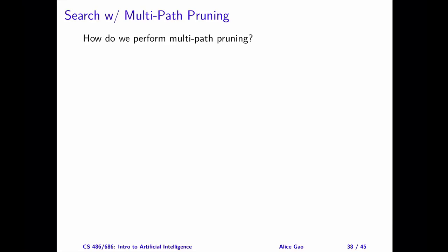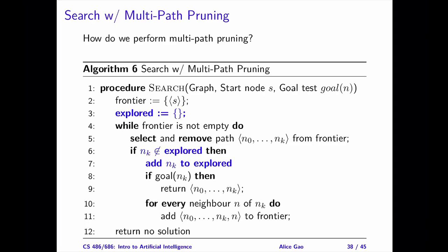Next, how do we perform multi-path pruning? Let's take a look at the pseudocode. Our goal is to keep only one path to a given node at any time. We will create an explored set to store all the visited nodes. After removing a path from the frontier, we will take n_k, which is the last node on the path.